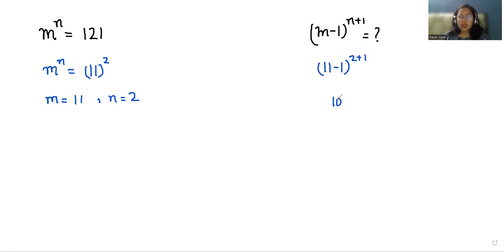11 minus 1 is 10, and 2 plus 1 is 3, so 10 to the power 3 is 10 times 10 times 10, that is 1000.